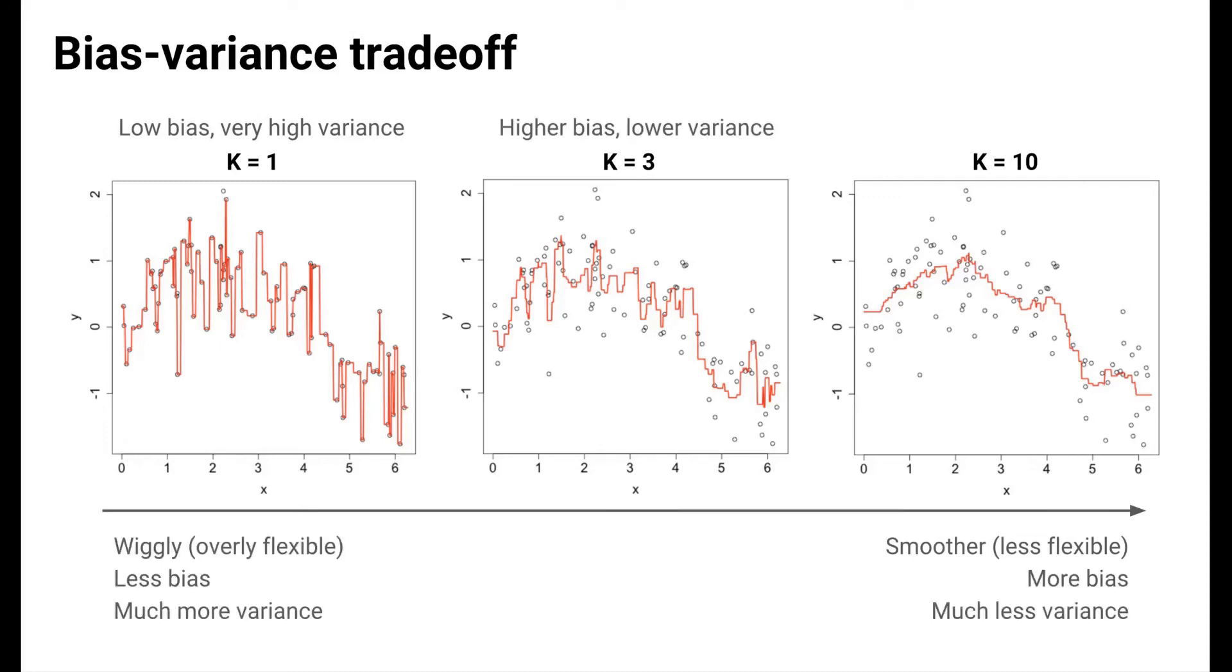When we move to k equals 3, bias increases because the function we learn is smoother and less complex. Our representation of the data is simpler. But the function looks smoother and seems to be doing a better job of capturing the general trend. This is even more pronounced for k equals 10.